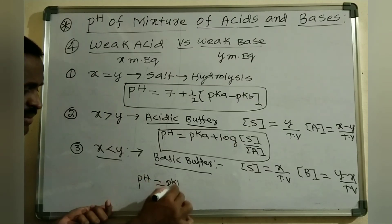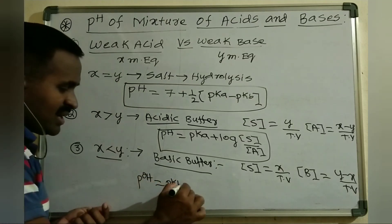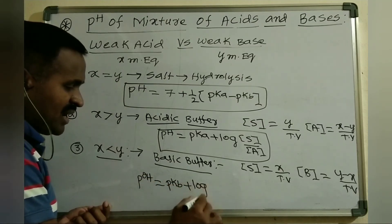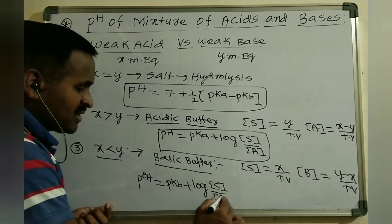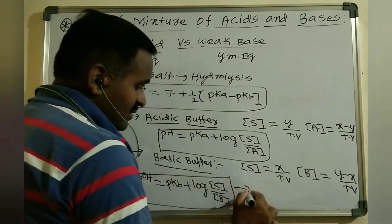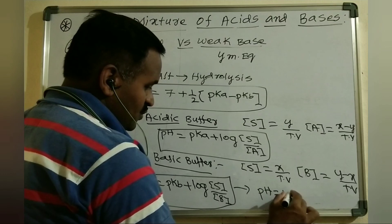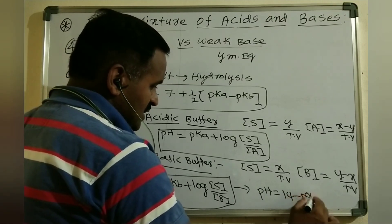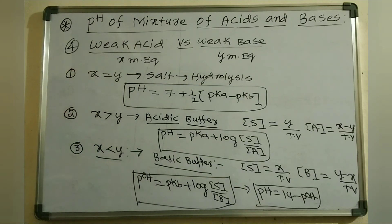Using the Henderson equation for the basic buffer: pOH equals pKb plus log of (salt concentration divided by base concentration). Then pH equals 14 minus pOH. This is the formula used to find the pH for weak acid versus weak base titration in the third case.